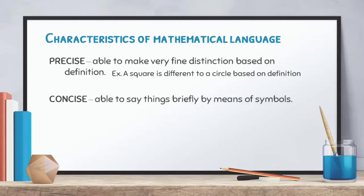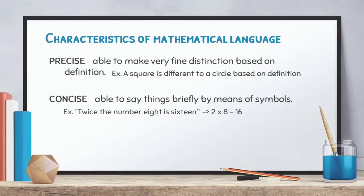Secondly, mathematical language is concise — we are able to say things briefly by means of symbols. It would be very hard to write an expression using only words, so it is easier to use symbols to make our sentences simpler. For example, 'twice the number 8 is equal to 16' can be written concisely as 2 × 8 = 16. That is concise — we write briefly by means of mathematical symbols.